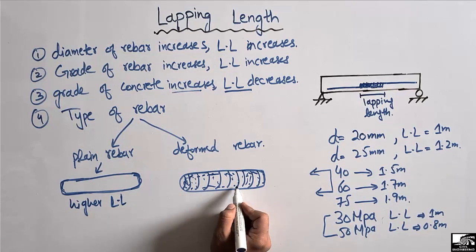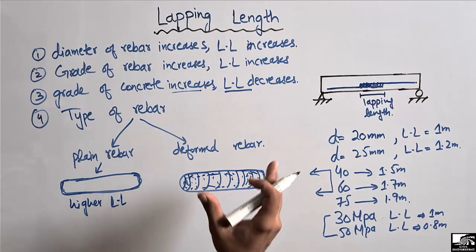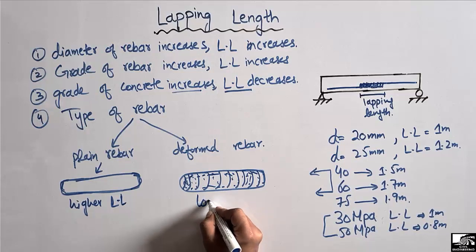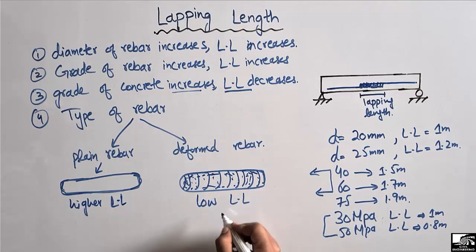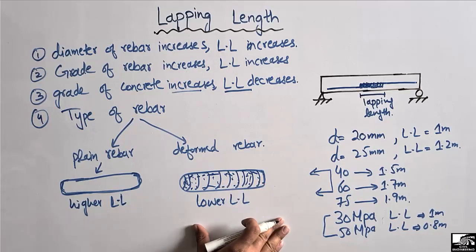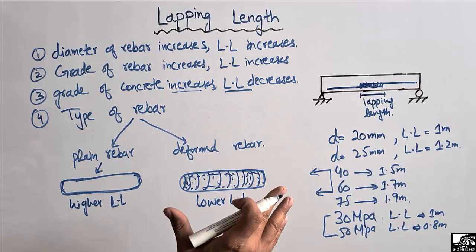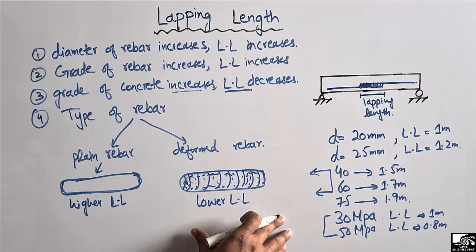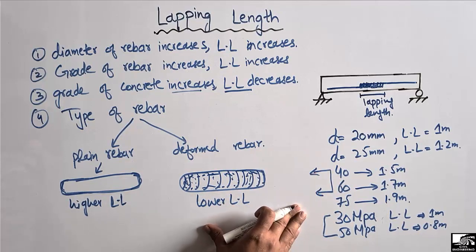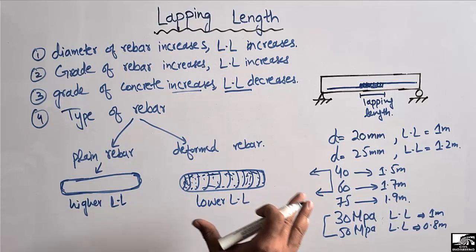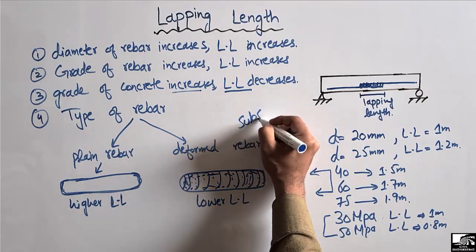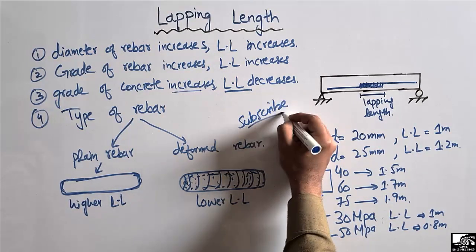So these are the factors that mostly affect the lapping length in beams, columns, slabs, and other structural members. Hope you guys understand the factors that affect the lapping length. Don't forget to subscribe to our channel for daily Seven Engineering videos. Thank you for watching.